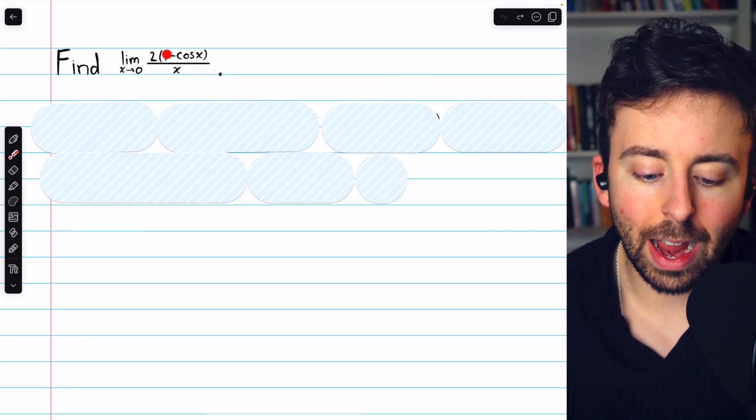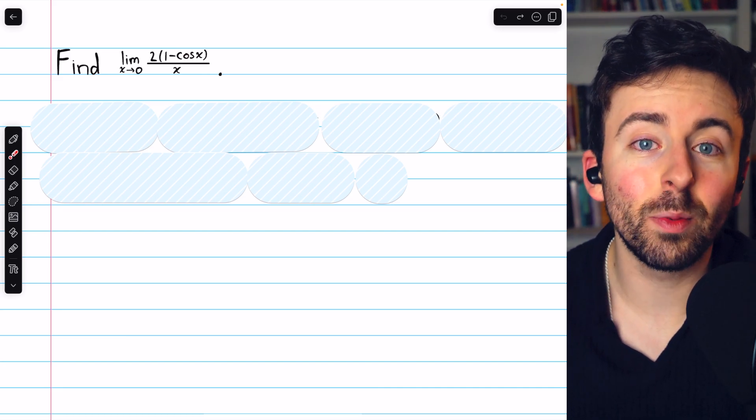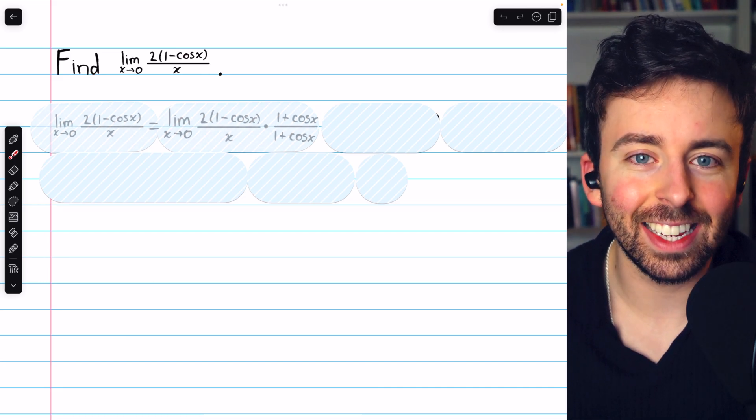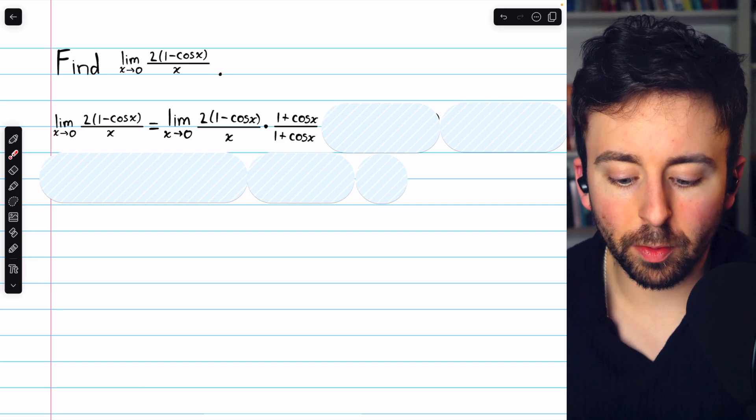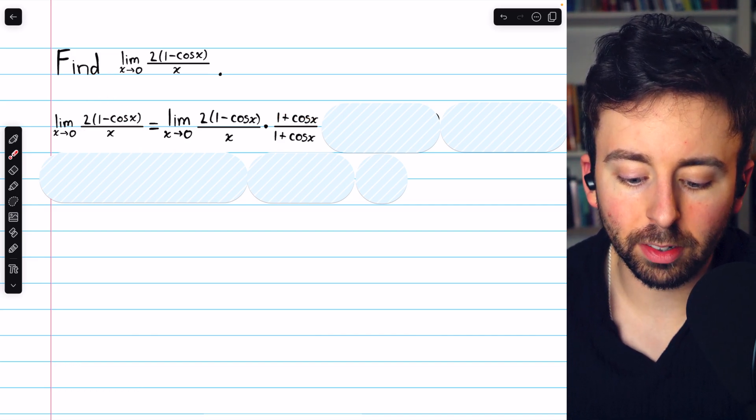And if we had the difference of squares, that would be 1 minus cosine squared. And then we could use the Pythagorean identity. So to evaluate this limit, the first thing we'll do is multiply it by the conjugate, 1 plus cosine x.